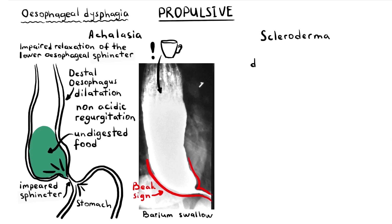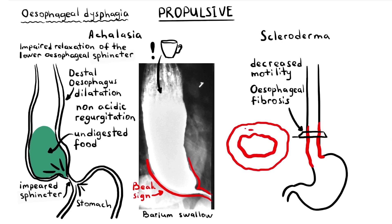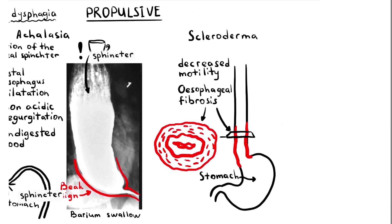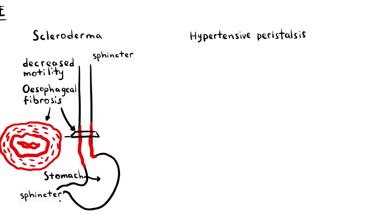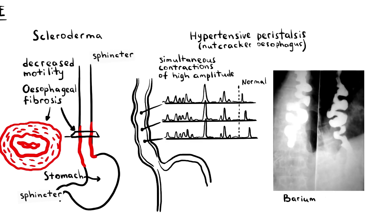Scleroderma is associated with decreased motility of any part of the gastrointestinal tract but more commonly affects the distal esophagus. It is a condition characterized by fibrosis of the skin and internal organs; in the esophagus it causes smooth muscle atrophy and fibrosis, making dysphagia an extremely common complication. Hypertensive peristalsis, also known as nutcracker esophagus, is a very rare cause of dysphagia where esophageal contractions are of very large amplitude but peristaltic motions are intact. On barium swallowing there is a characteristic corkscrew appearance.